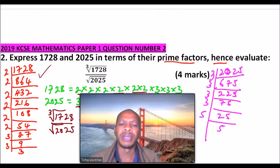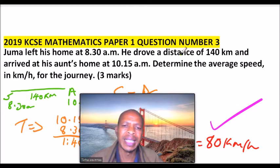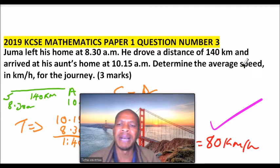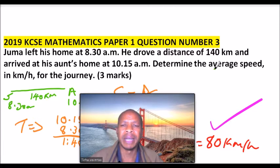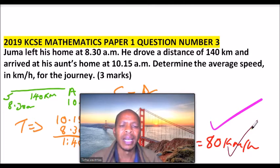Number three: you are told Maa left his home at 8:30, he drove a distance of 140 kilometers and arrived at his aunt's home at 10:15 AM. Determine the average speed in kilometers for the journey. You have three marks there. I have also worked out the final answer you get, which is 80. You can click the link below to see how you work out that. You covered this in linear motion in form two.